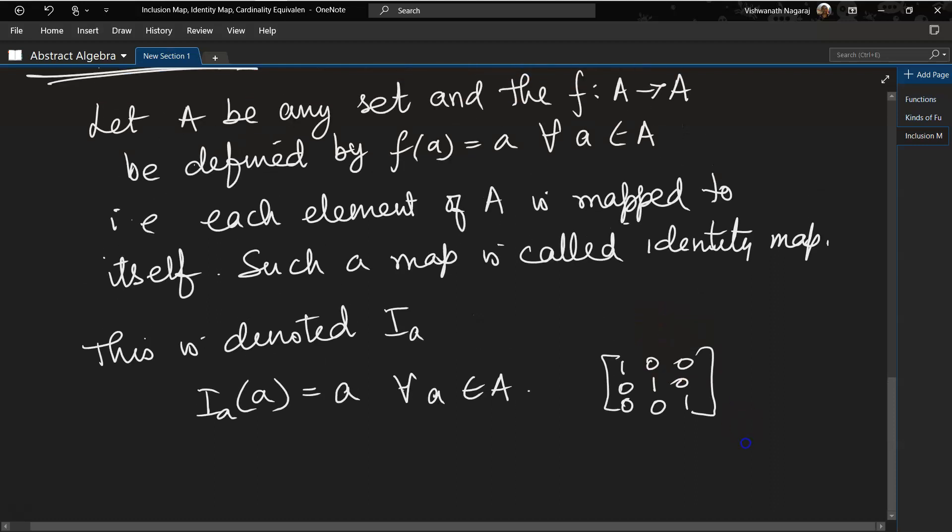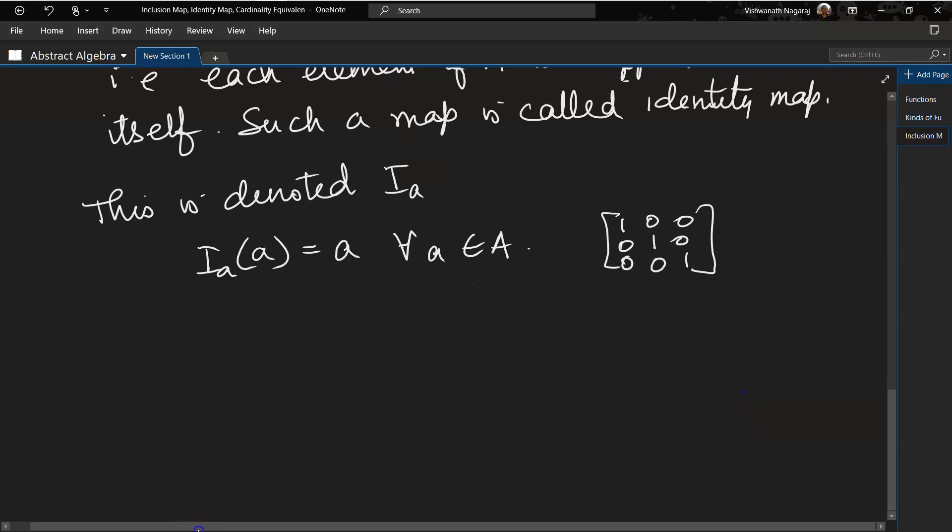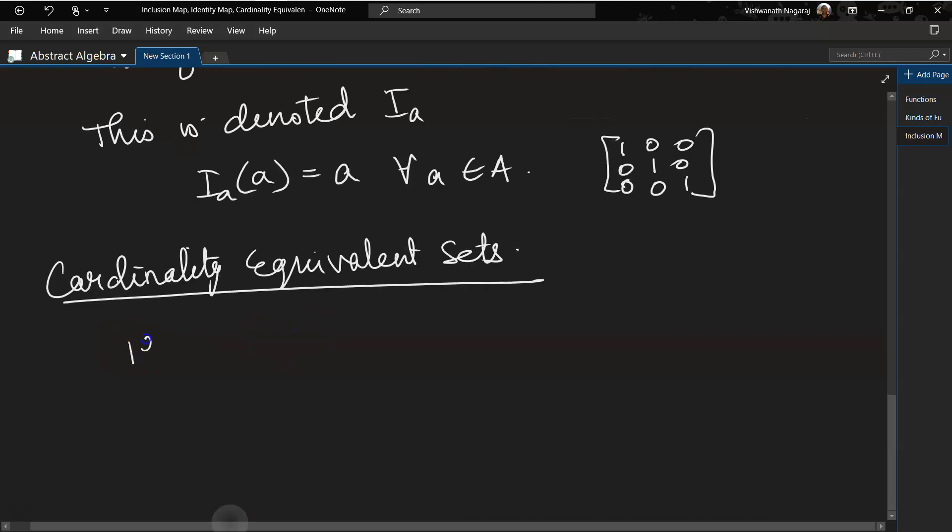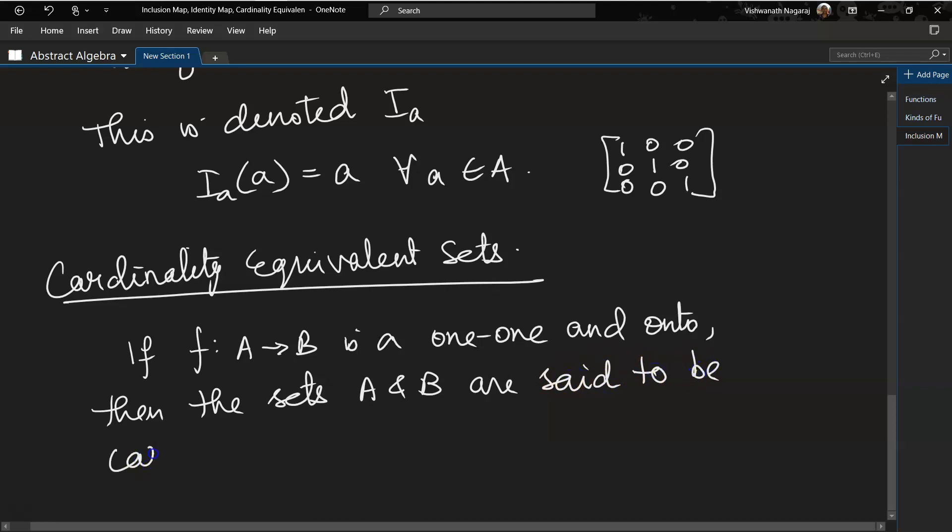Now let's look at the cardinally equivalent sets. If a function from A to B is one-to-one and onto, one-to-one remember means an element of A is mapped to one element of B, so it is one-to-one. And onto means what? In set B there is no free element after this one-to-one. Then the sets A and B are said to be cardinally equivalent.